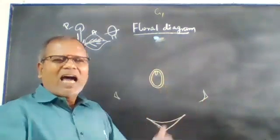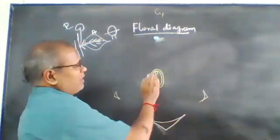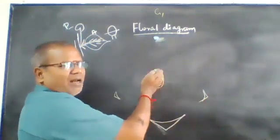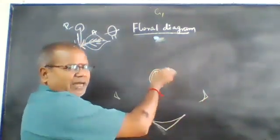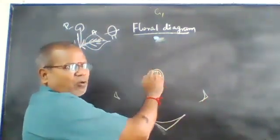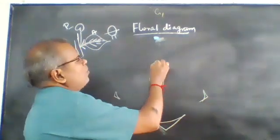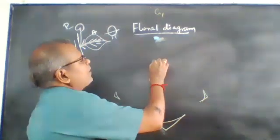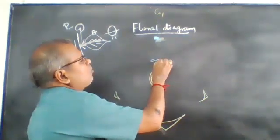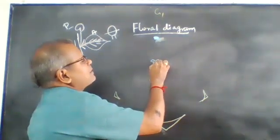Next, what is the name? Androecium. The gynoecium is followed by the androecium. You can add 10 stamens.